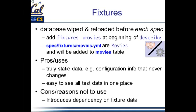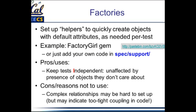The alternative is a factory, which is the more popular way to do this. The idea is that you set up little helper methods that quickly create real objects with a set of default attributes. You can just say give me a movie — I don't care what the title or rating is, just so it's a valid movie object with sensible values. Each test just creates the ones it needs, and they get destroyed when the test is over. A pretty popular gem for this is called Factory Girl, which is installed with the bookware.